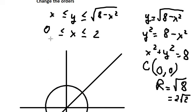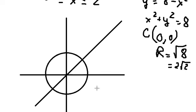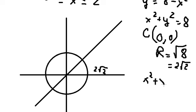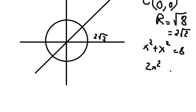We can see that they start at zero and stop at two. This location here is at two times the square root of two. To find the intersection, we set x equal to y, so we have x squared plus x squared equals 8, giving us two x squared equals 8. We divide both sides by two and we get x equals two, so the intersection is at two.